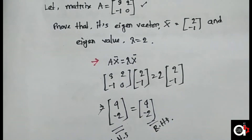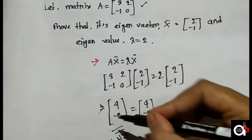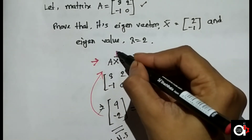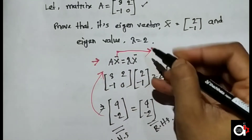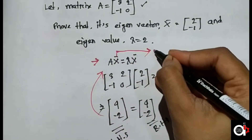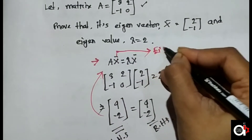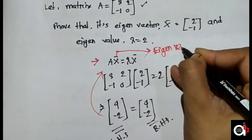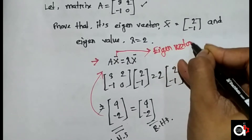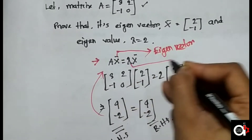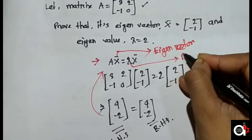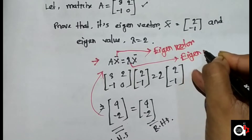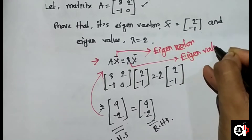That means the condition is fulfilled. The value x is an eigenvector, and this scalar lambda is an eigenvalue. This means we have proof that x and lambda satisfy the eigenvalue-eigenvector definition.